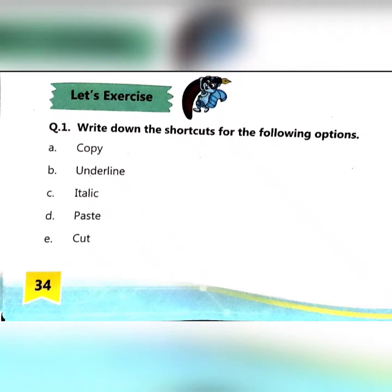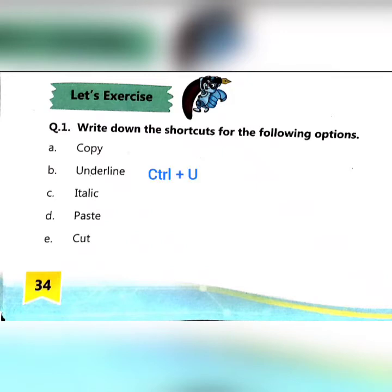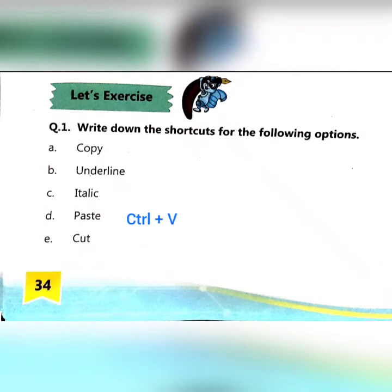Now look at your textbook, turn to page 34. Let's do exercise question number one: write down the shortcuts for the following options. A — Copy: Ctrl+C. B — Underline: Ctrl+U. C — Italic: Ctrl+I. D — Paste: Ctrl+V. Very good. E — Cut: Ctrl+X. Well done.